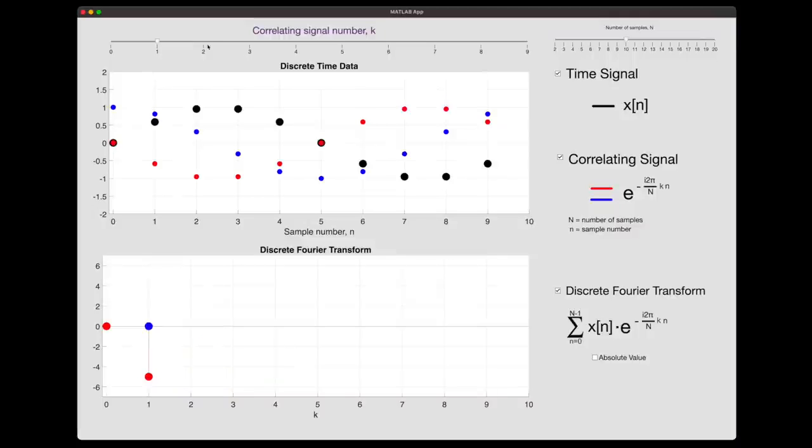And if we move to k equals two, the correlation drops again. And this is all the DFT is doing. It's going through n different frequencies, where k goes from zero to n minus one, and calculates the correlation between it and the time signal. That's pretty cool, right? I mean, that we can think of the DFT as producing the correlation between our time signal and a bunch of different frequencies.